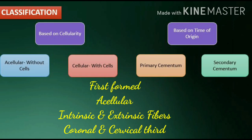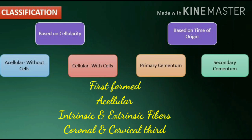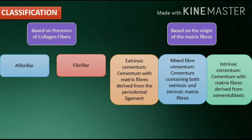Primary cementum consists of intrinsic and extrinsic fibers. Secondary cementum forms after the tooth reaches the occlusal plane. It consists of extrinsic and intrinsic fibers and is present in the apical third and the interradicular portions of the teeth. Based on the presence of collagen fibrils — afibrillar cementum, cementum without collagen fibrils; fibrillar cementum, cementum with collagen fibrils.